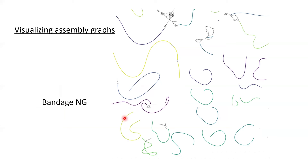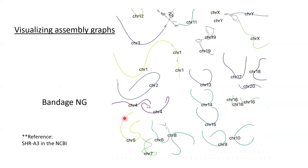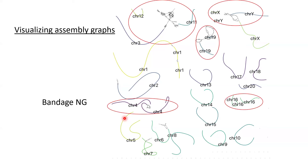As a first step, we use Hi-C data to generate a scaffold contact map. We named the unitigs 3, 4, 5 as the scaffold names, and named them as chromosome 4 using the reference. Hi-C data evidence shows two of the unitigs should be connected together, so we can connect through the gaps. At smaller scales, we can find more scaffold holes to be connected with chromosome 19.